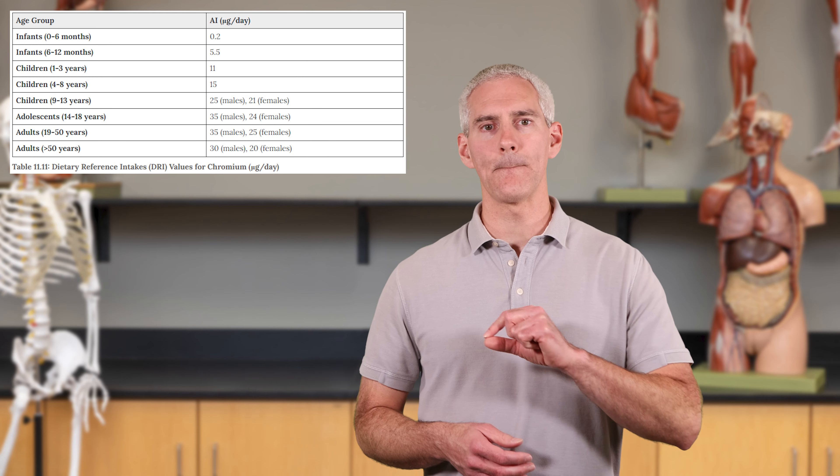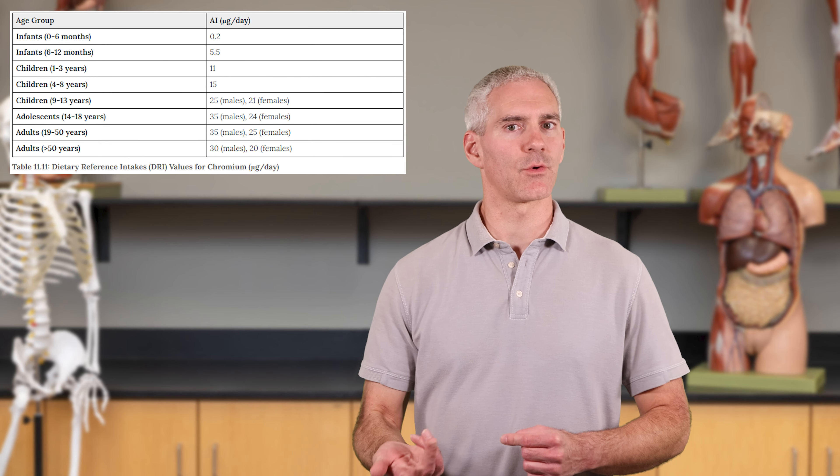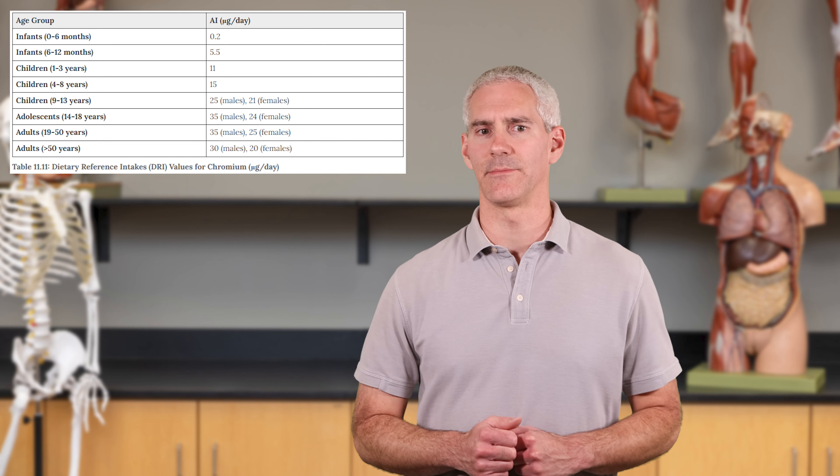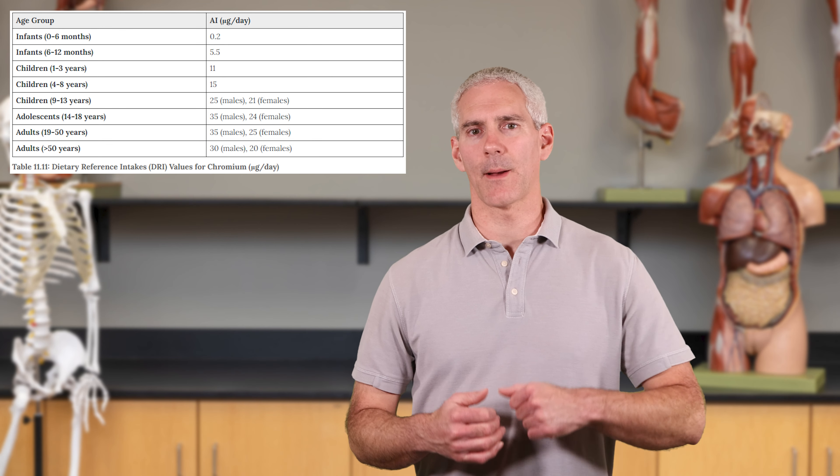With a chromium deficiency you could see weight loss, peripheral neuropathy — where nerves coming off the spinal cord aren't firing properly — and elevated plasma glucose levels, because chromium was helping with insulin. Impaired glucose utilization means insulin is not functioning properly, so you're not handling glucose properly. Sources include meats, nuts, and green vegetables. The RDA is about 0.2 micrograms up to about 35 micrograms for adult males and 25 for females, dropping a bit after age 50.